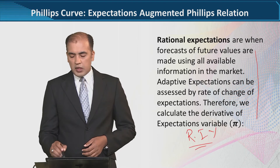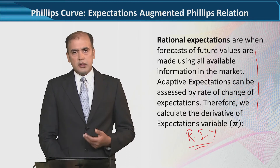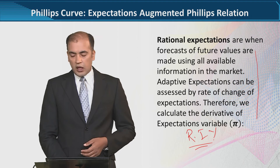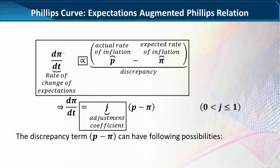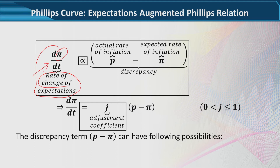As you can see, we have finally incorporated expectations. If expected inflation is shown by pi, then its rate of change shown by its derivative will be directly proportional to the discrepancy between the actual inflation rate and the expected inflation rate.